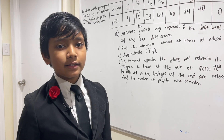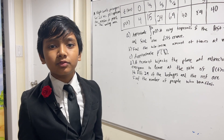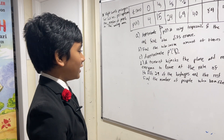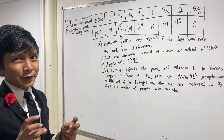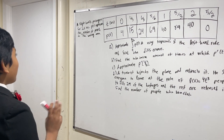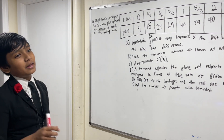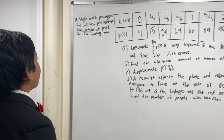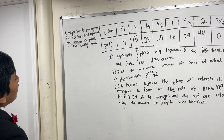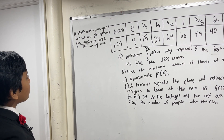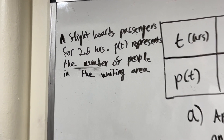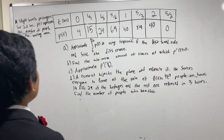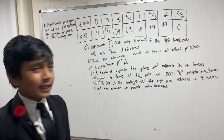So basically I took a bunch of AP Calculus problems from past exams, just cherry-picked problems and smushed them together — so that's what you're seeing here. There's gonna be a little humor in the last one. This will start off with something that will probably be college-board approved. A flight boards passengers for five and a half hours — 5/2 or 2.5 hours. P of T represents the number of people in the waiting area — you know, the area with all those chairs. Here's a beautiful table.